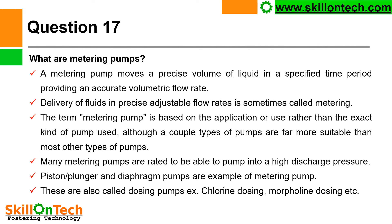What are metering pumps? A metering pump moves a precise volume of liquid in a specified time period, providing an accurate volumetric flow rate. Delivery of fluids in precise, adjustable flow rates is sometimes called metering. Many metering pumps are rated to pump into high discharge pressure. Piston, plunger, and diaphragm pumps are examples of metering pumps. These are also called dosing pumps — for example, chlorine dosing, morpholine dosing, etc., in industries.